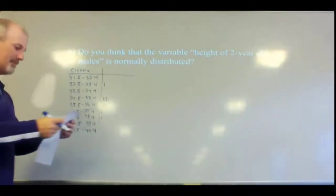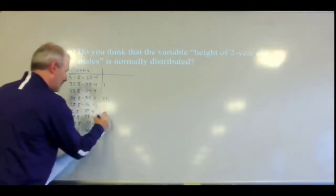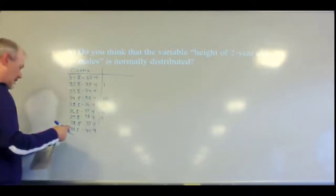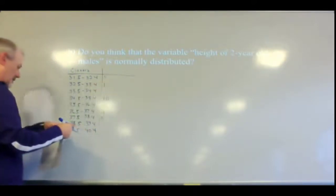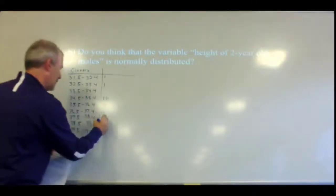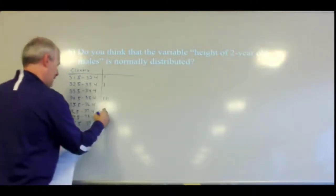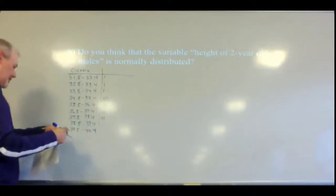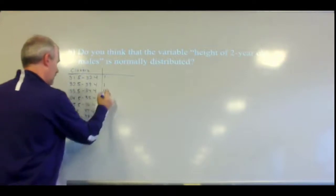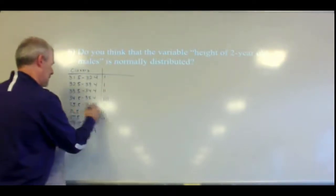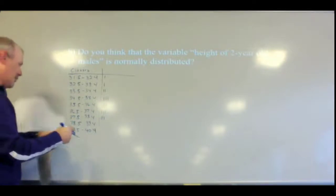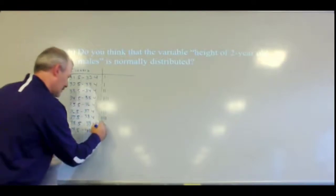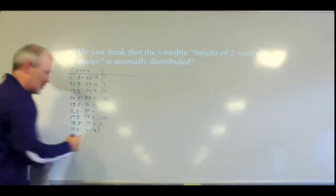So I've done the first row. Second row: 37.4, 38.2, 31.5, 37.7, 36.9, 34.0, 34.4, 35.7, 37.9, 39.3. That's the first two rows.